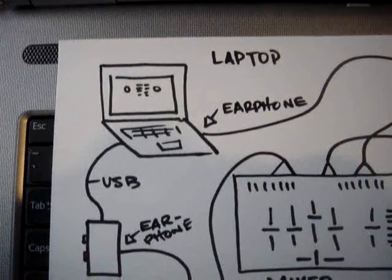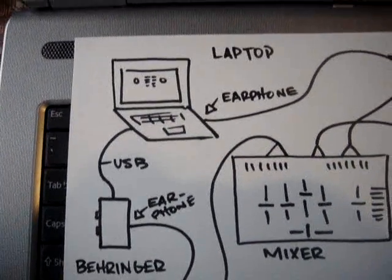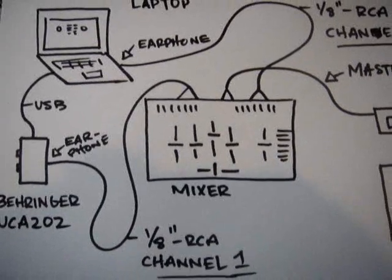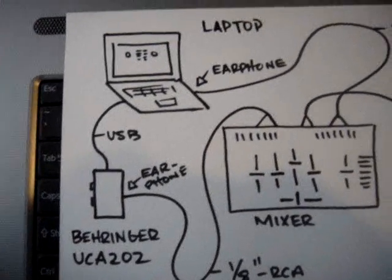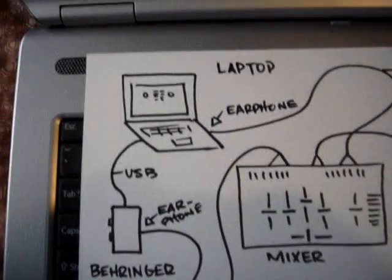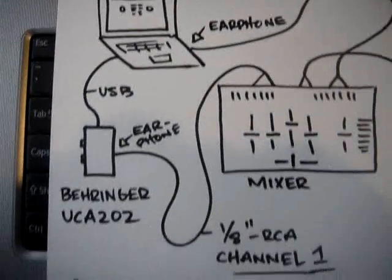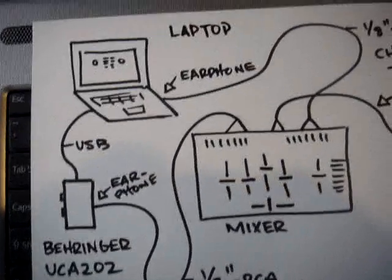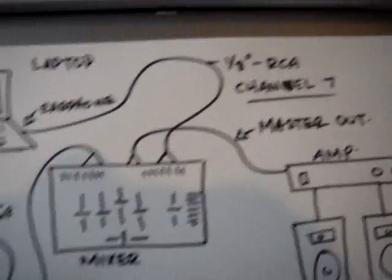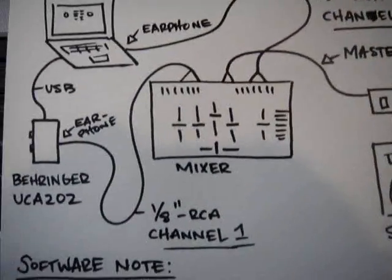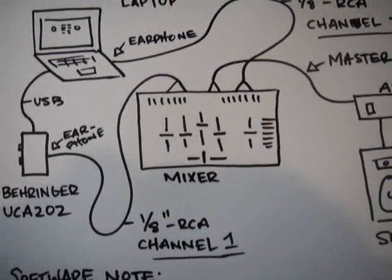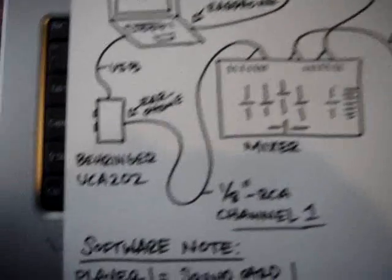So to recap: to connect your laptop to a regular analog mixer, you need two different audio sources coming out of that laptop. The way I've achieved it is with the Behringer UCA202 and a couple of 1/8-inch to RCA cables, plus a little configuration in the software to route everything to the mixer.